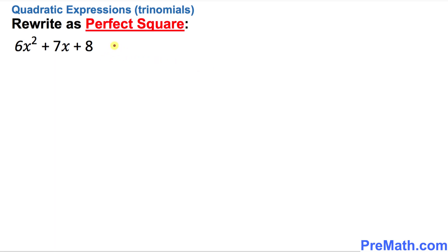The very first thing I want you to do is write down the given expression and set it equal to 0. If you are asking why we did this, it is a nice kind of trick we are going to use to make our job a lot easier. We are just pretending that this equals 0.